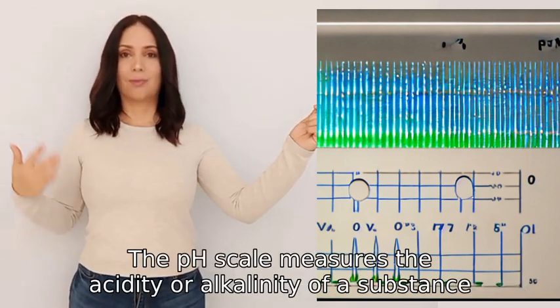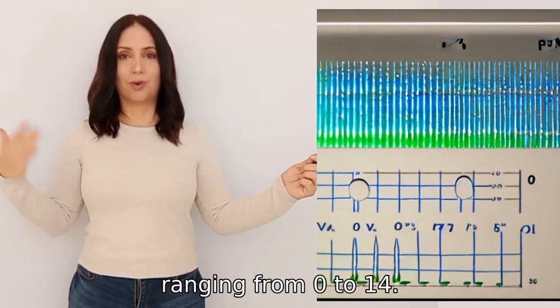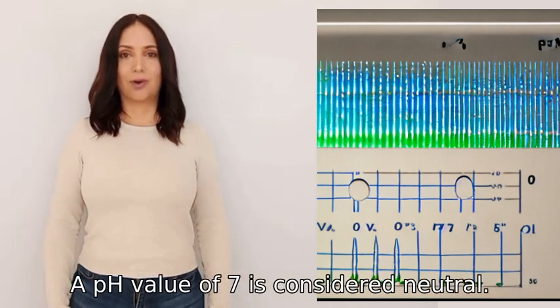The pH scale measures the acidity or alkalinity of a substance, ranging from 0 to 14. A pH value of 7 is considered neutral.